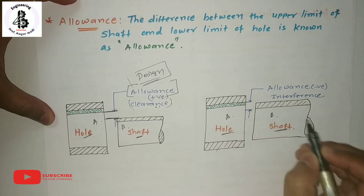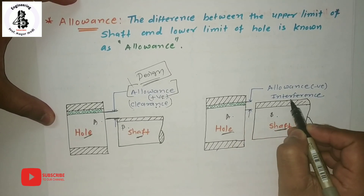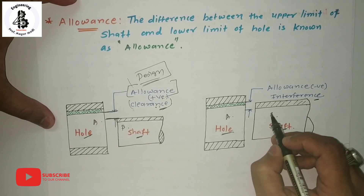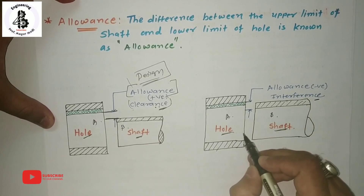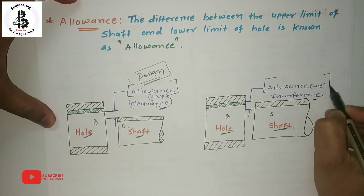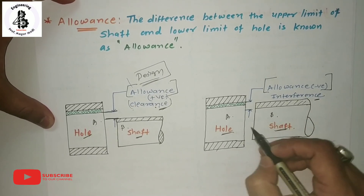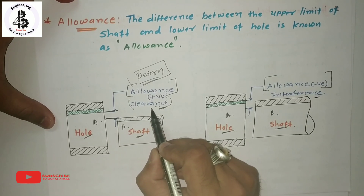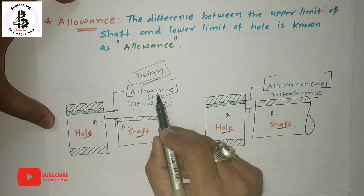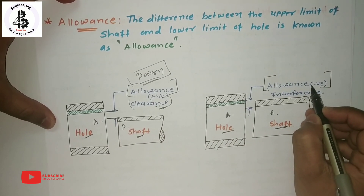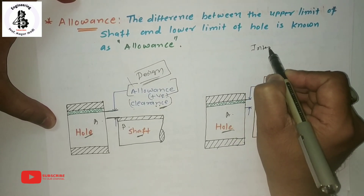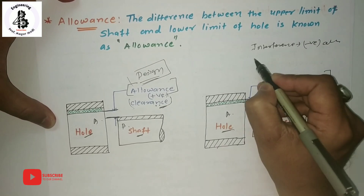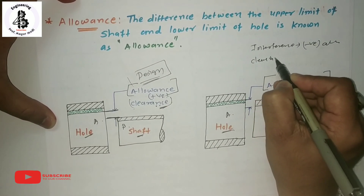For the second case, you can see component A and component B in the hole system and shaft system. If they have an interference kind of fit — these two fits, clearance fit and interference fit, I already explained in my previous lectures, please refer to those — in case of allowances for interference fits, it will be indirectly called a negative allowance for design as well as for production.